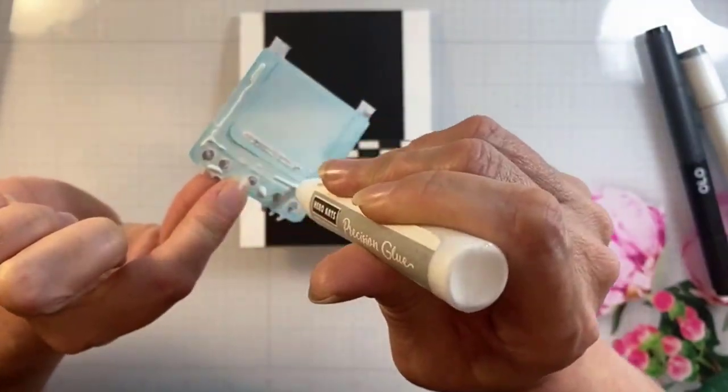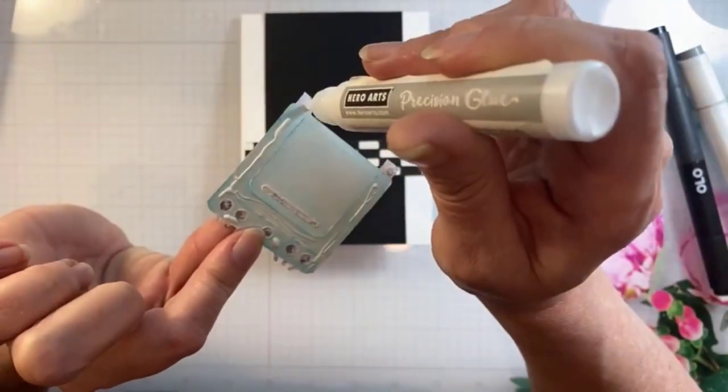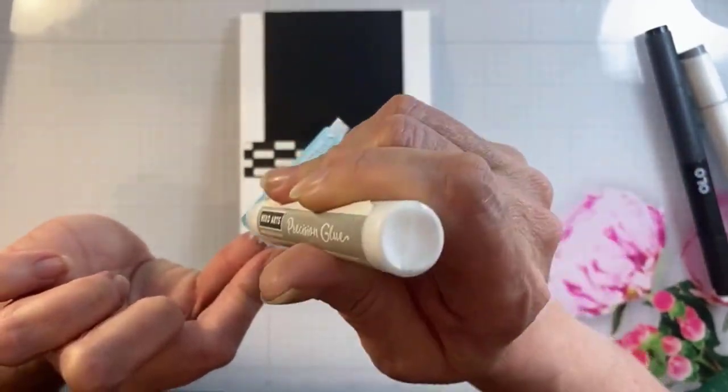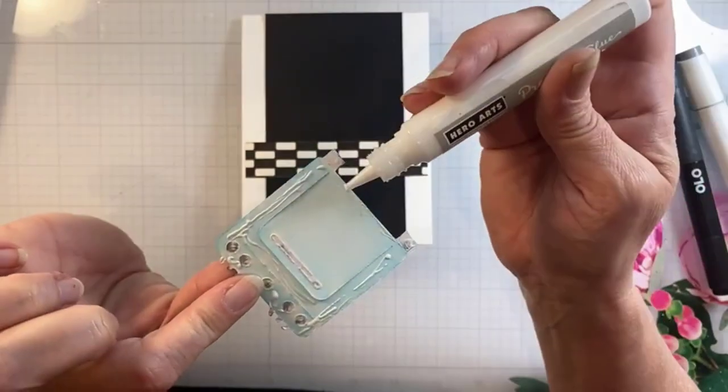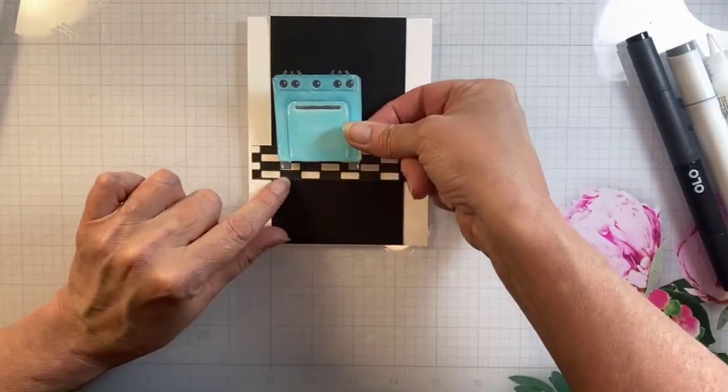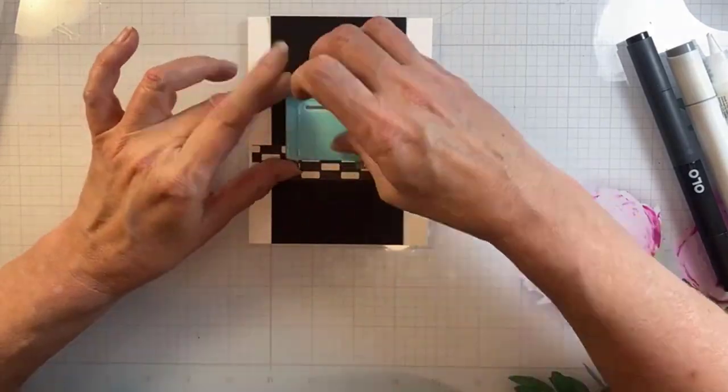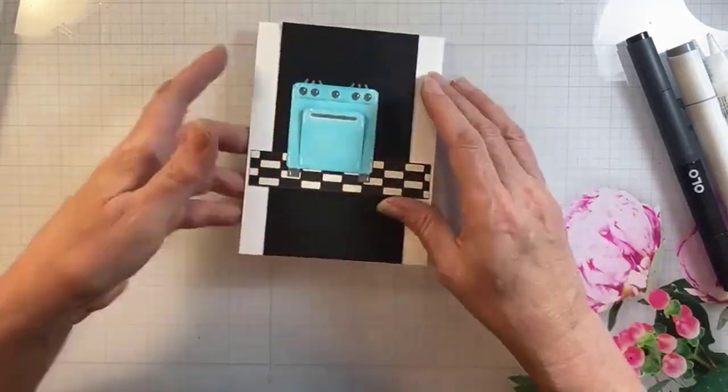And when you apply the glue you want to put it around the edges don't put it on the door because I want a little bit of dimension on that door but do put it underneath so that everything is anchored except the door and you can pop that door open just a little bit. I have this slightly off center again on purpose I think that just adds a little bit of interest to the design.